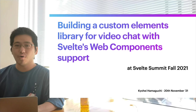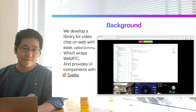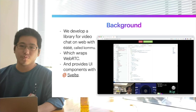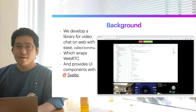Before explaining why we adopted Svelte and web components, I need to share the context. We were developing a library called KOMU, which provides WebRTC-based video chats. It was started as an ordinary class library and wraps around the complexity that WebRTC introduces. But video chats also inevitably have to interact with users visually, so users need to sort out the mess of the DOM and events.